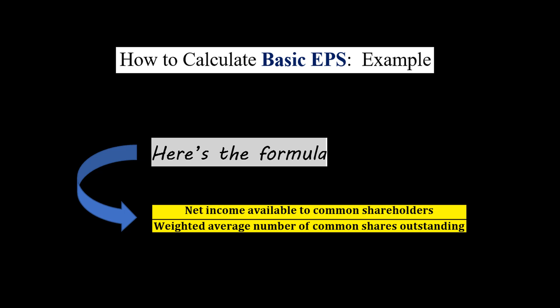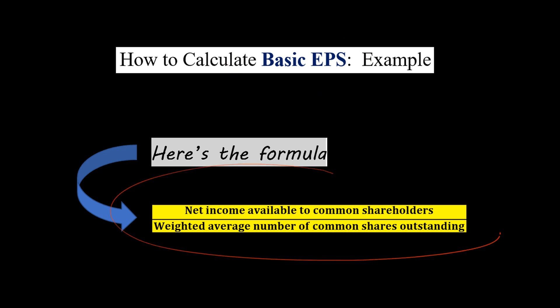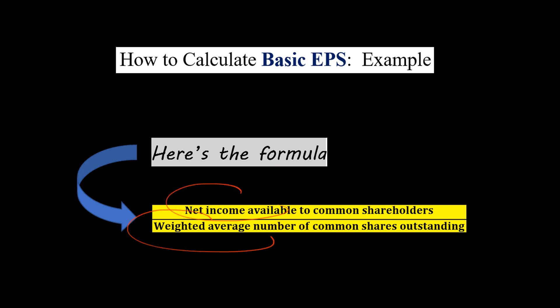Let's do an example of how to calculate basic earnings per share. Here's the formula we're going to use: net income available to common shareholders in the numerator, divided by the weighted average number of common shares outstanding.